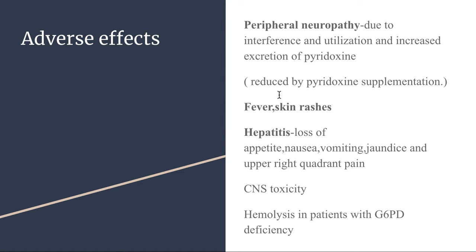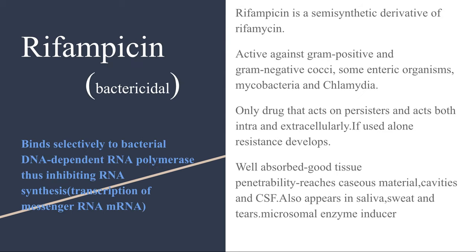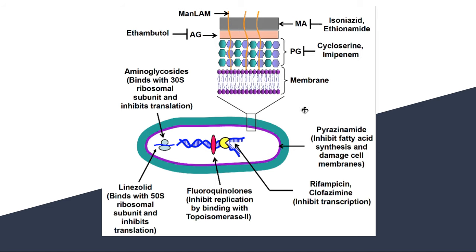Other adverse effects of isoniazid include fever, skin rashes, and CNS toxicity in some patients. It is also associated with hepatitis presenting with loss of appetite, nausea, vomiting, jaundice, and upper right quadrant pain. In patients with G6PD deficiency, there may be hemolytic anemia due to increased reactive oxygen species.